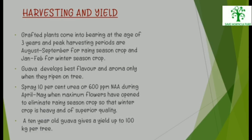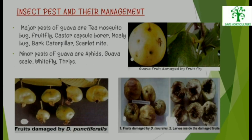Harvesting and Yield: Grafted plants come into bearing at the age of 3 years. Peak harvesting periods are August to September for rainy season crop, and January to February for winter season crop. Guava develops best flavor and aroma only when they ripen on the tree. Spray of 10% urea or 600 ppm NAA during April to May when maximum flowers are open can eliminate the rainy season crop so that the winter crop is heavy and of superior quality. A 10-year-old Guava tree gives a yield of up to 100 kg per tree.